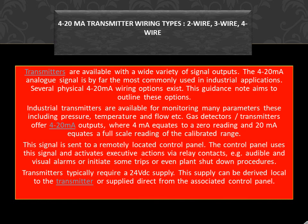4-20mA Transmitter Wiring Types: 2-Wire, 3-Wire, 4-Wire. Transmitters are available with a wide variety of signal outputs. The 4-20mA analog signal is by far the most commonly used in industrial applications. Several physical 4-20mA wiring options exist, and this guidance note aims to outline these options.